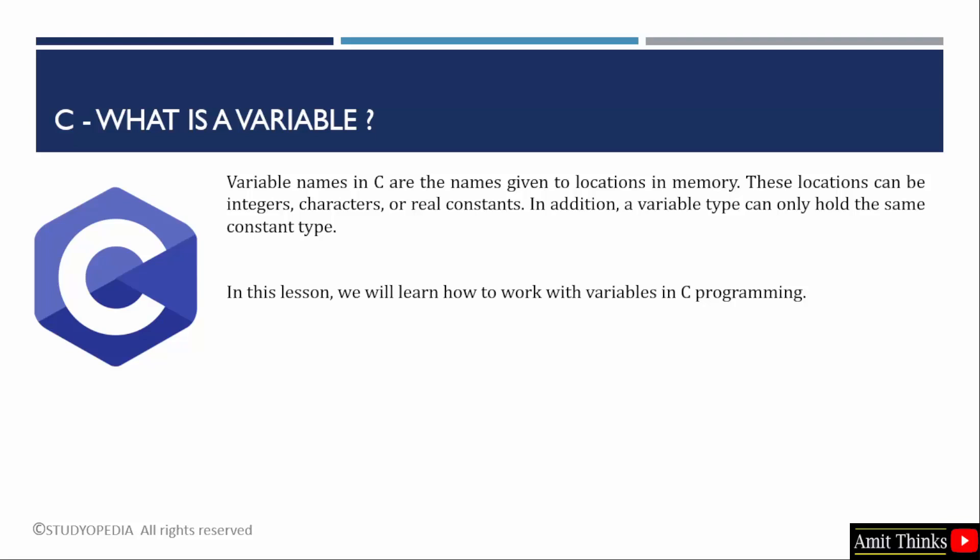Consider a variable in C as a symbolic name associated with a storage location in the computer's memory. That is the name given to locations in memory. Variables are used to store and manipulate data values during the execution of a program. These locations can be integers, characters, or even constants.